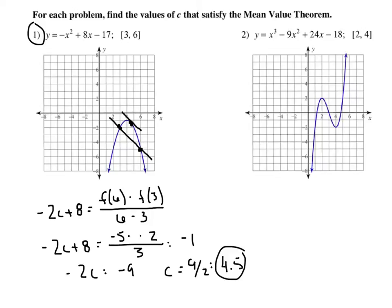Now, number 2 — just to speed things up — all I want to know is how many solutions there are to the mean value theorem, and I want to change the interval so that it goes from 1 to 5. I want you to be able to visualize a secant line that goes from x equals 1 all the way to x equals 5, and then tell me how many parallel tangent lines there are within the interval. It looks like there's going to be one approximately right there, and there's going to be a second one right there. Just to save some time, I just want to visually show you that there would be two solutions, not just one, if the interval is from 1 to 5.